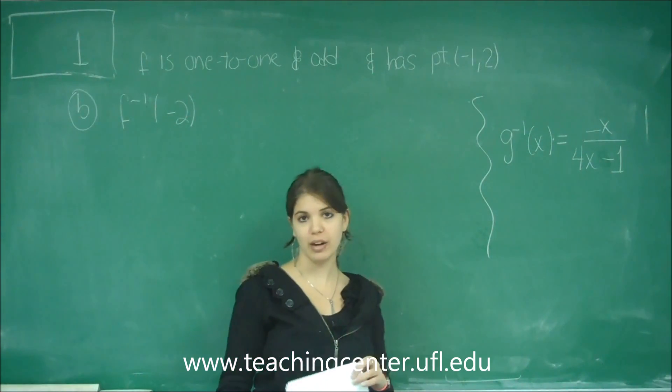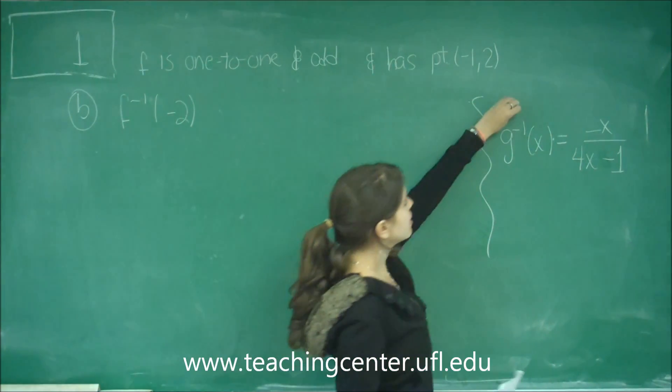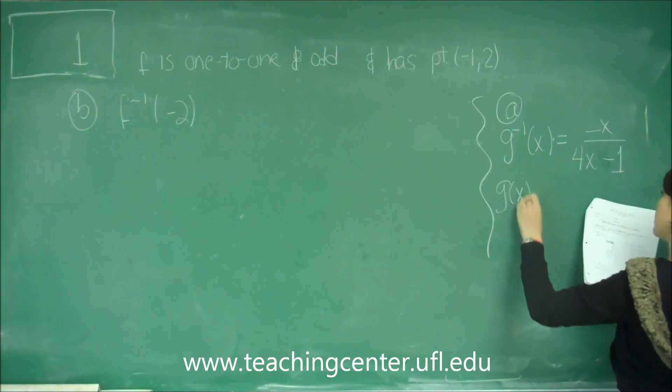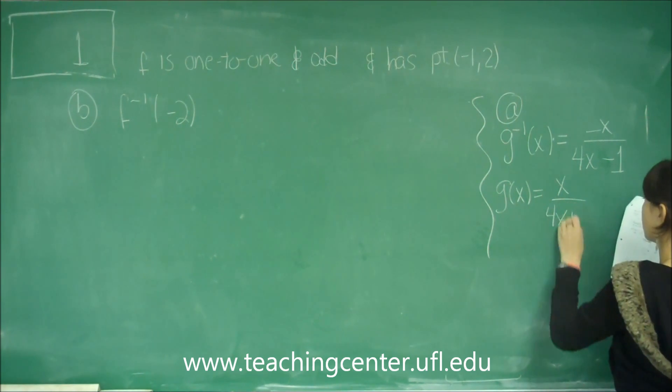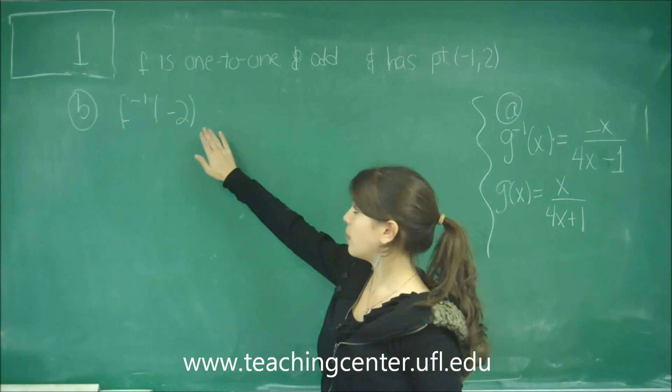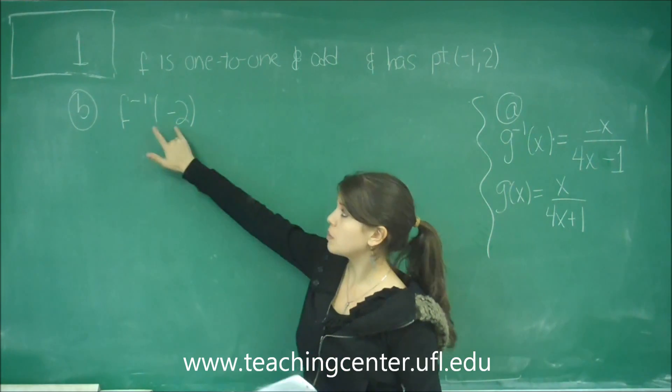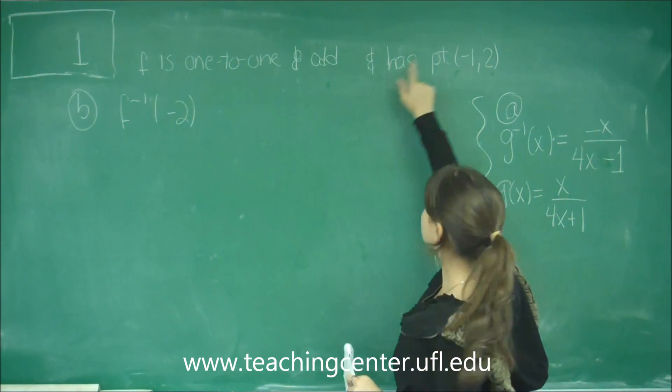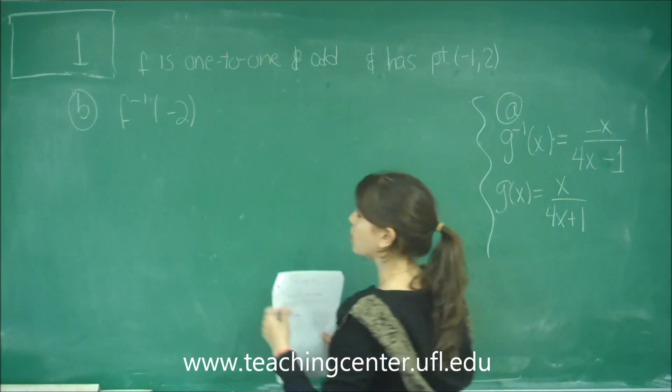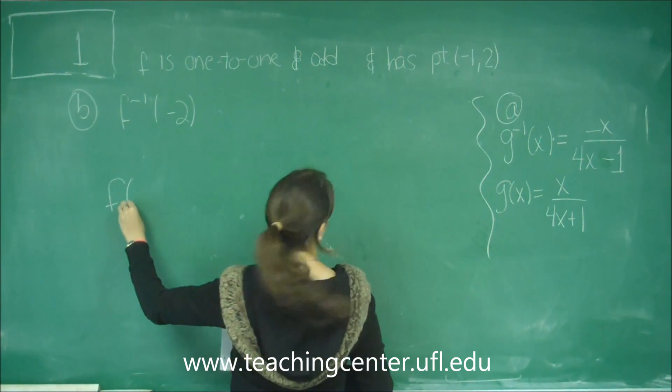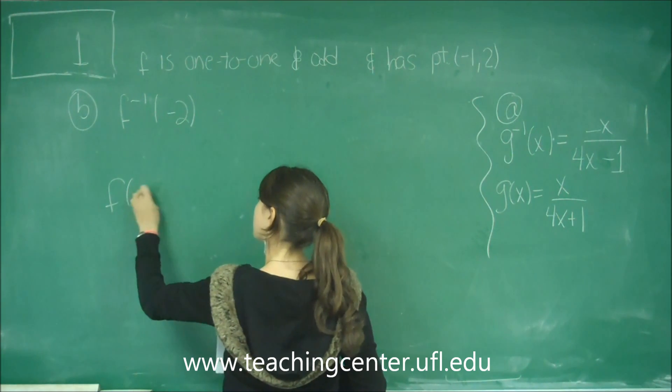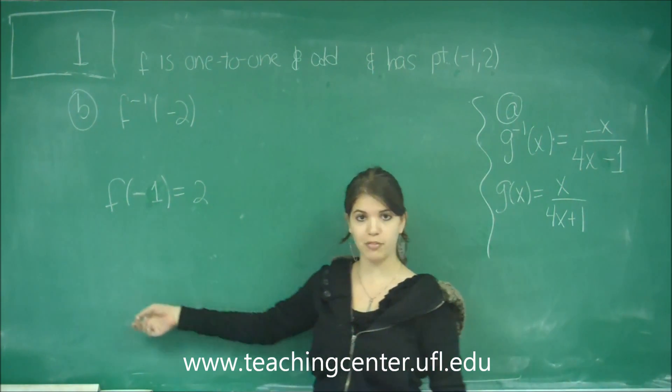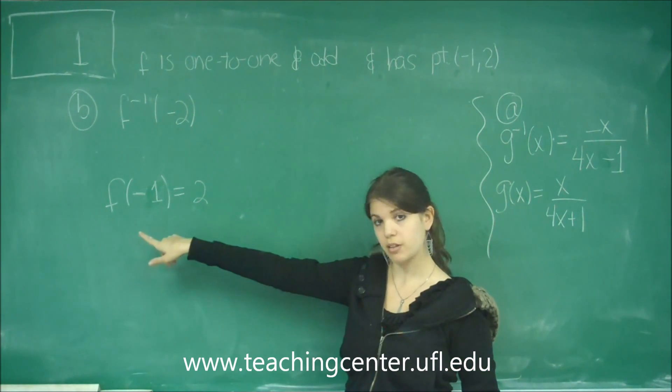This is problem 1 of the free response part b. We've already gotten for part a the inverse of g. And also g was given. So now we need to find the inverse of f at 2. And that's related to the point that they give us, (-1, 2). They say f is a 1 to 1 and odd function that has the point (-1, 2). So let's just go ahead and write that in terms of f. So -1 is the x value and 2 is our y value. Remember that anything that's f of, g of, any type of function like that, that is the y value.